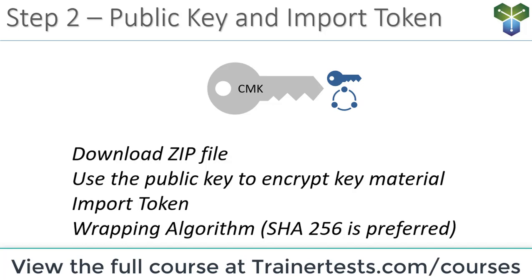For the wrapping algorithm, SHA-256 is the preferred option. SHA-1 is needed if you're using OpenSSL, so if you're trying this at home with OpenSSL, use SHA-1 — but the recommended encryption algorithm is SHA-256. You'll download the wrapping key and the import token, choosing your wrapping algorithm, and extract the resulting zip file.